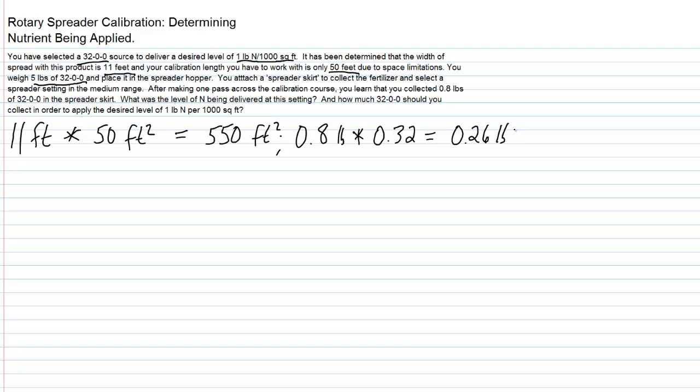And that means that 0.8, 32 percent of it, is 0.26 pounds of nitrogen that's contained within that 0.8 pounds of 32-0-0.